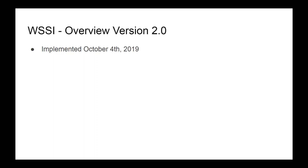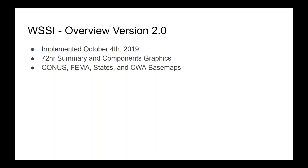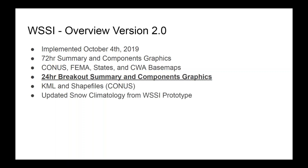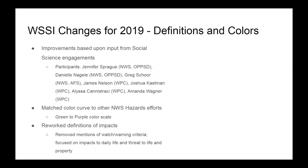So what is in version 2.0? We implemented it on October 4th, 2019. You still get what you had — the 72-hour summary and component graphics. Now we have the addition of imagery at the CONUS, FEMA, state, and CWA level. There's also the 24-hour breakout summary and component graphics — so summary and components as 24-hour breakouts now. The data is also in KML and shapefile format at the CONUS level, and that's in not only the 72-hour summary but also the daily day one, day two, day three format as well. We've also updated the snow climatology and the flash freeze index.